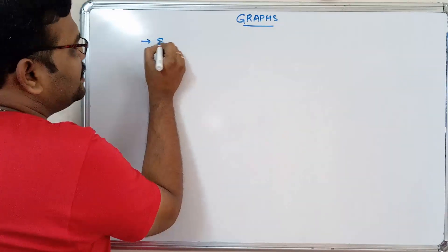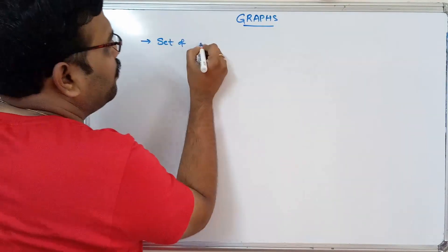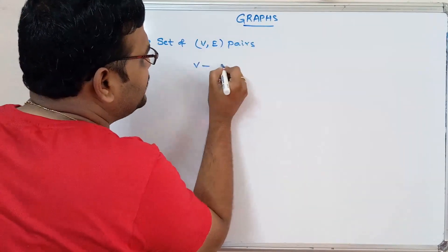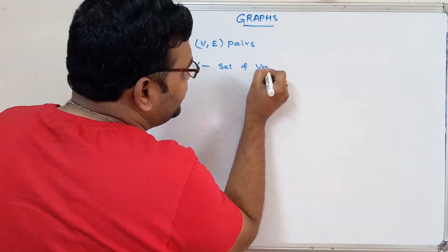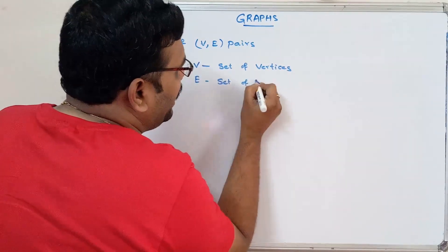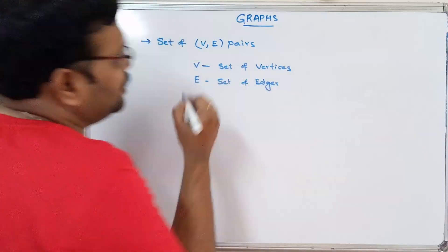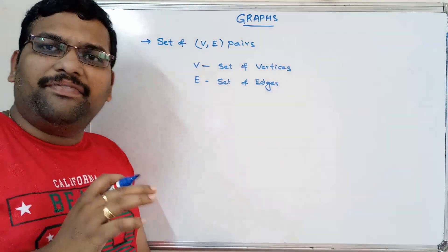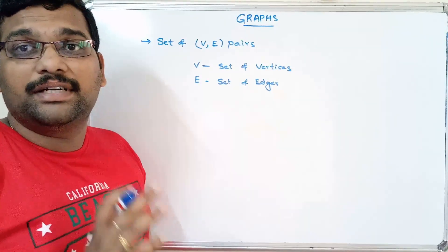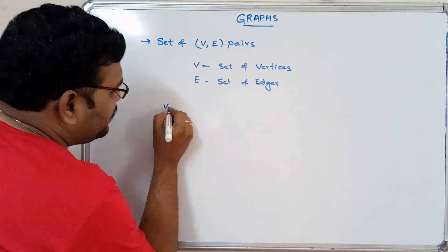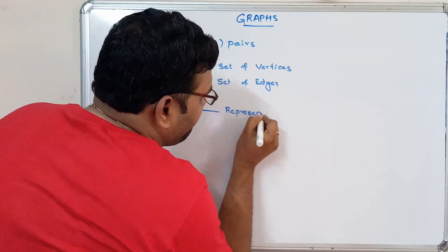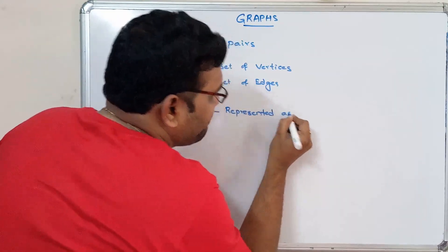A graph can be defined as a set of V comma E, where V is a set of vertices and E is a set of edges. So every graph will have vertices and edges.